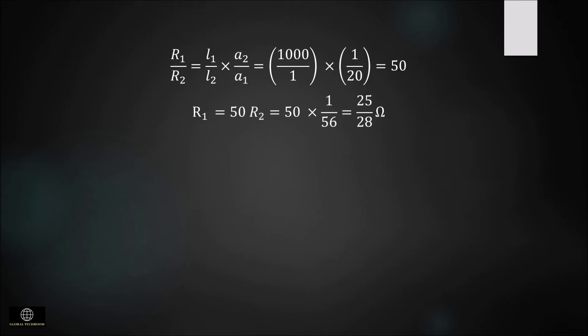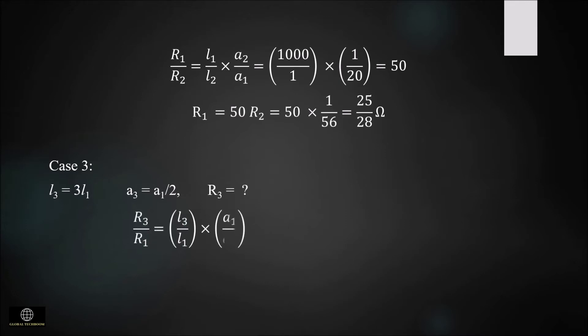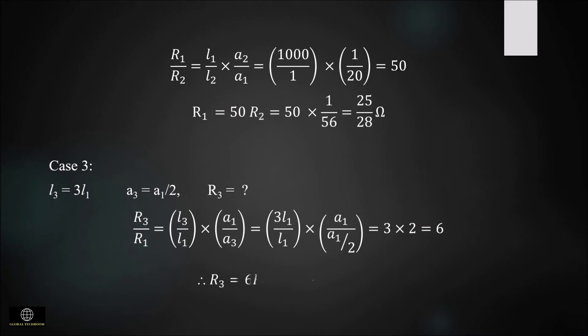In the third case, the length is 3 times L1 and the area is half of A1, and we have to find the resistance. Applying the ratio R3/R1 and substituting the values of length and area, we get the ratio as 6. So R3 = 6 × R1 = 6 × (25/28), which gives the answer as 75/14 ohm.